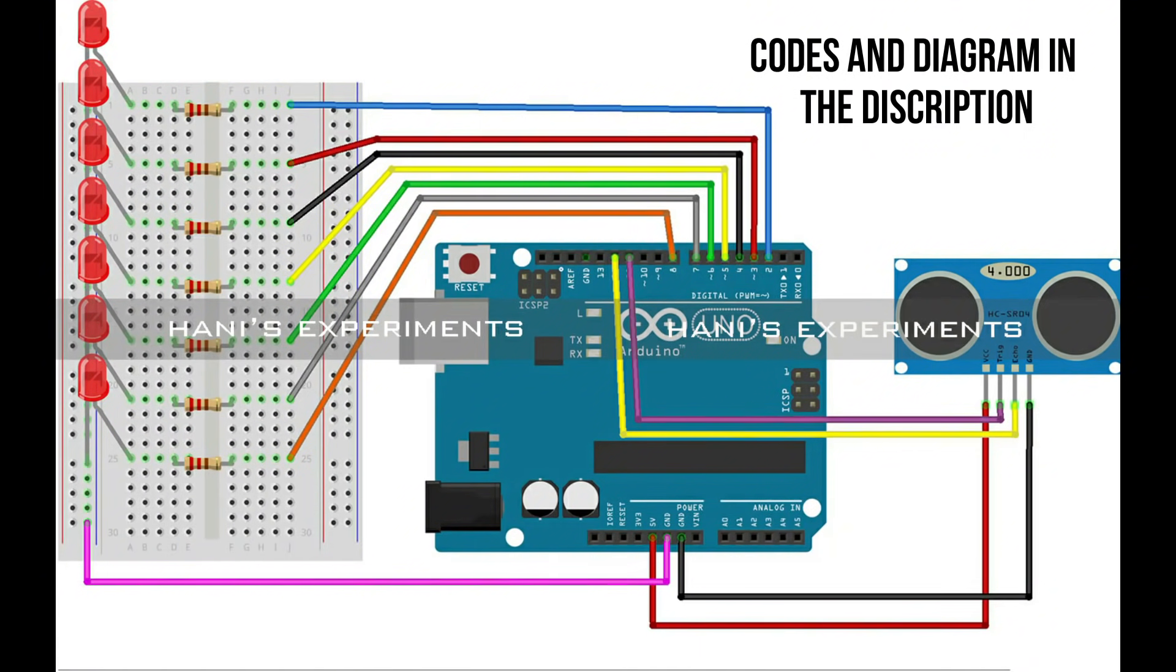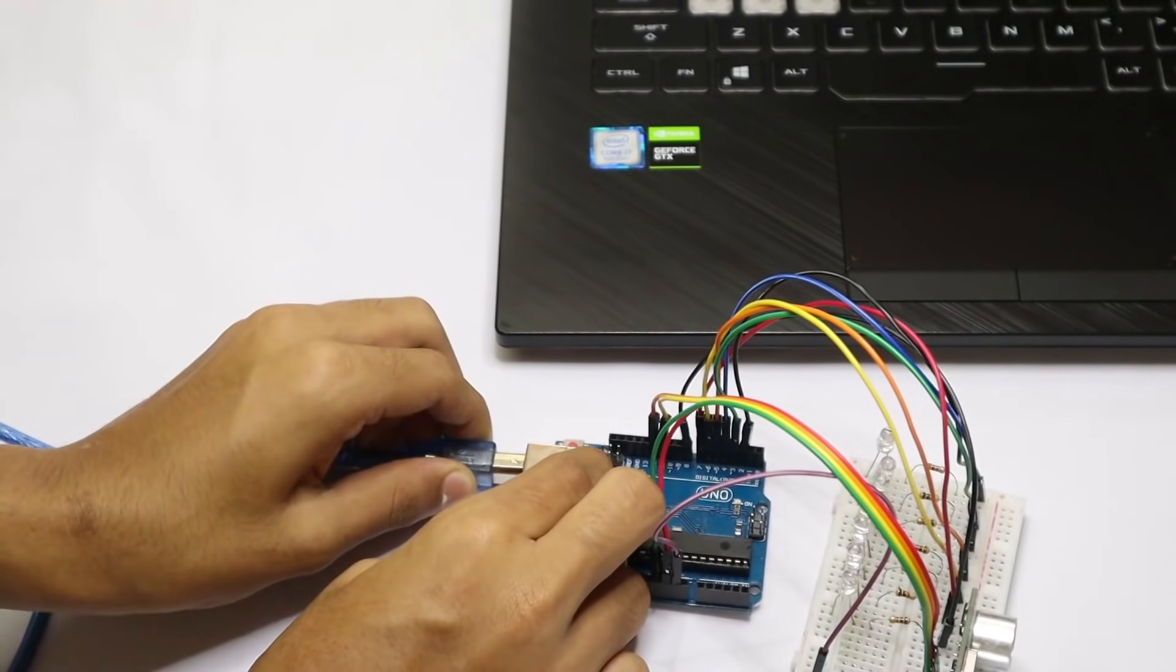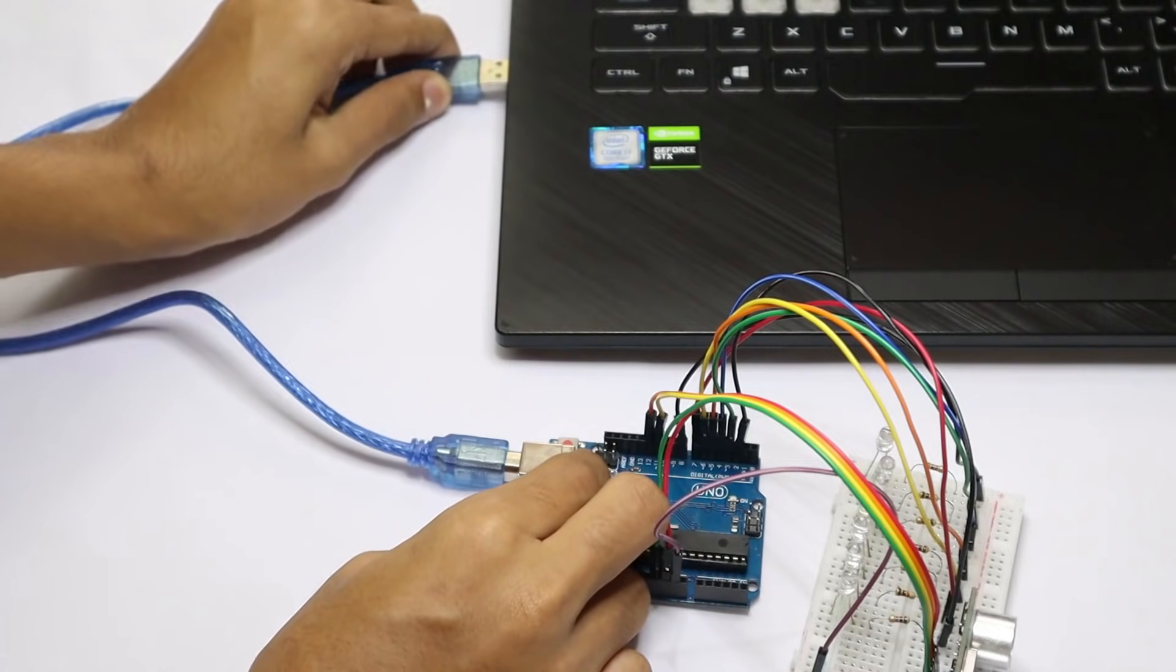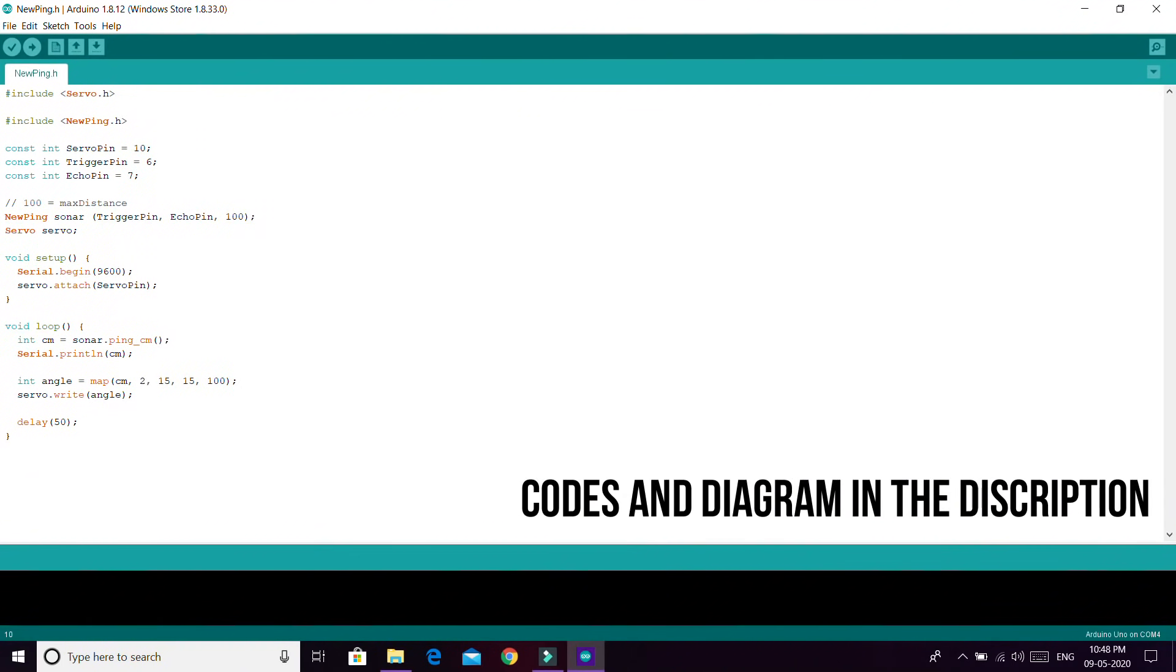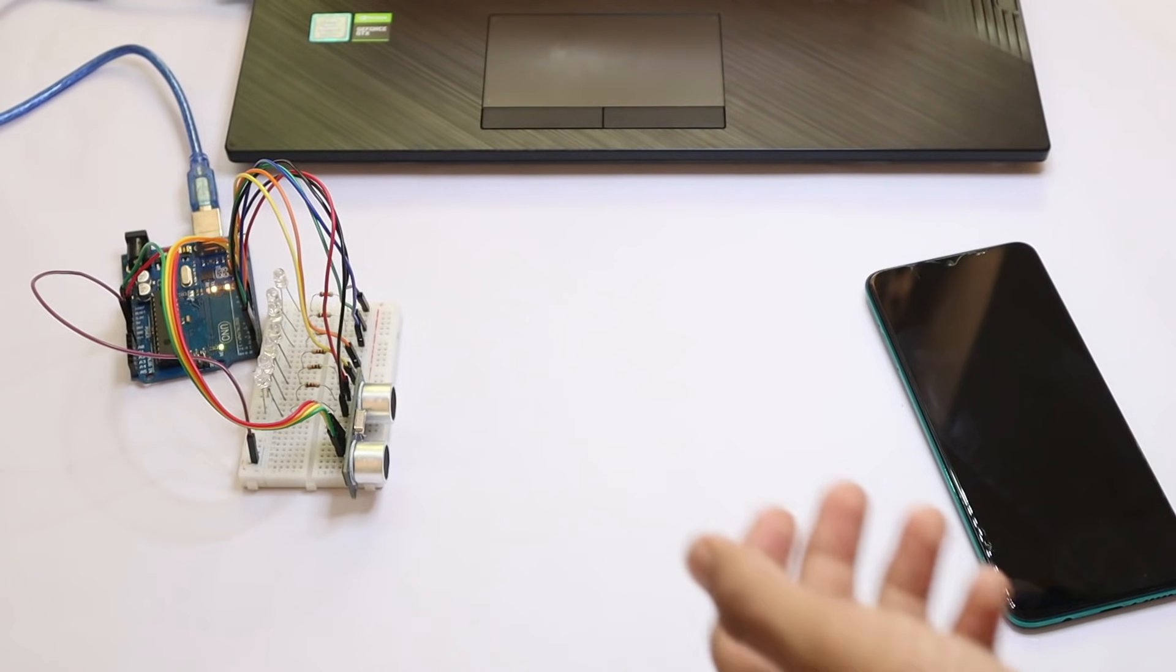Now the next step is to code your Arduino. So this is the code for the Arduino project. Sometimes you can see there is a NewPing library and sometimes it might not work in some Arduino IDEs, so you may want to go to the library manager and download NewPing. And after that you can just click upload and you're done.